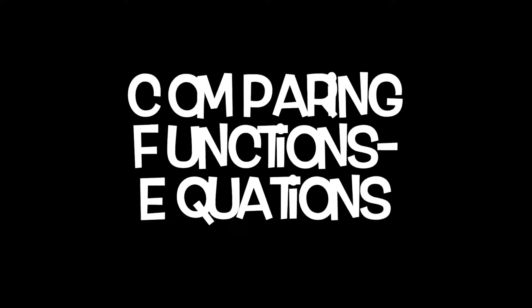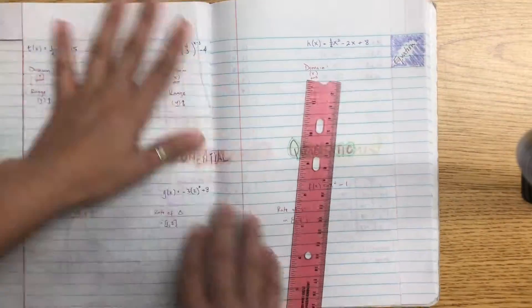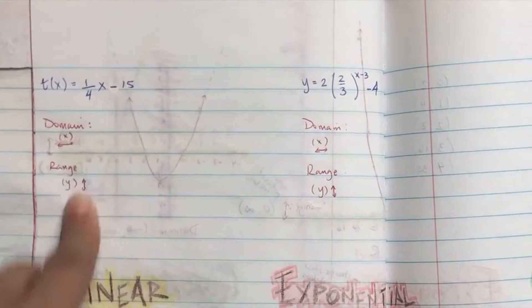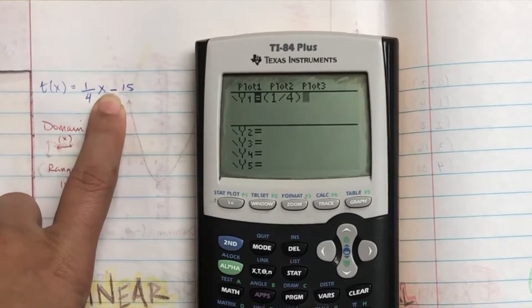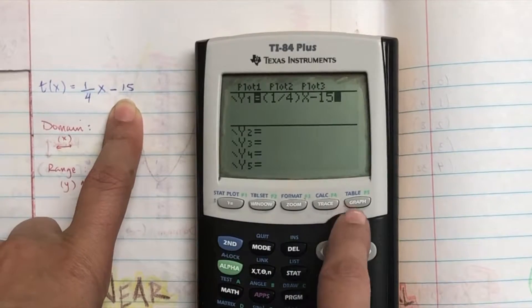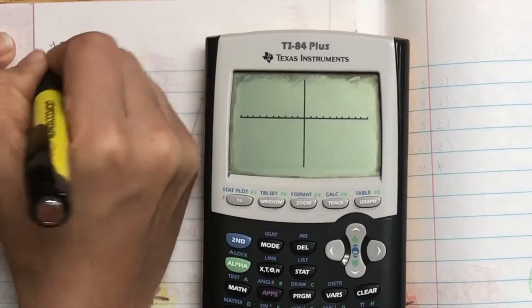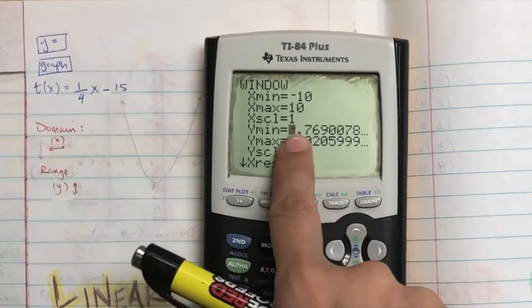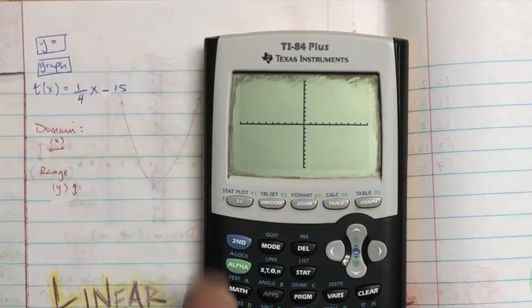We're going to take a look at comparing fractions through equations. We're going to make a new tab and title it 'equation.' Looking at the first one, to find domain and range, the first thing you always do is go y equals and plug it in. Remember, every time you have a fraction, put it in parentheses. Then hit graph and it will show you the graph. If the graph isn't right, set the window to negative 10, 10, 1, negative 10, 10, 1.